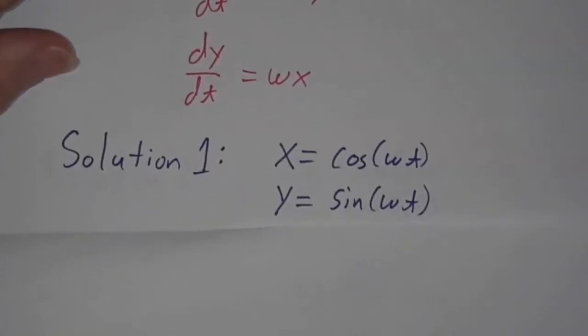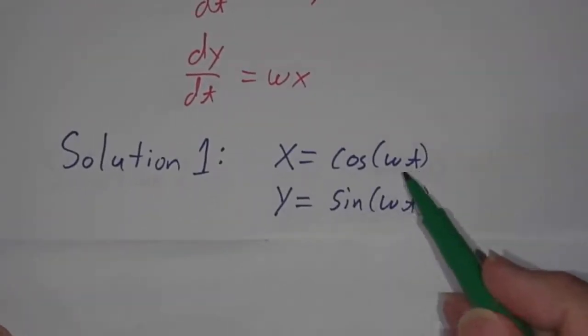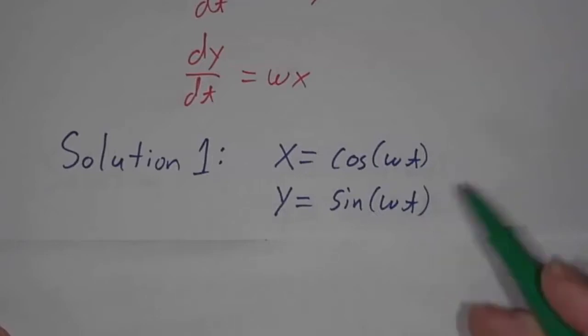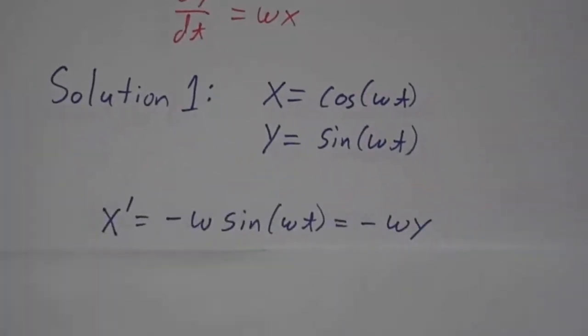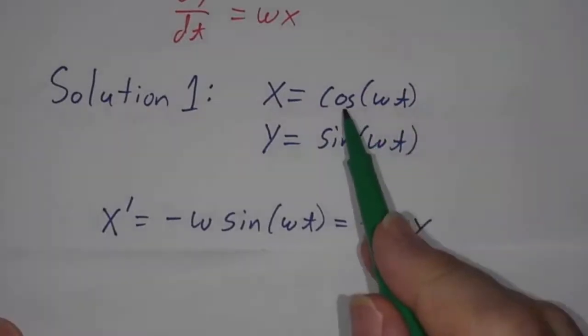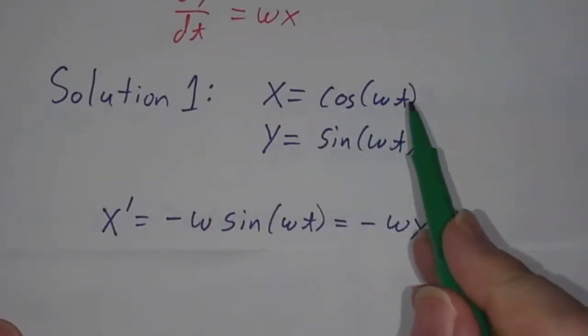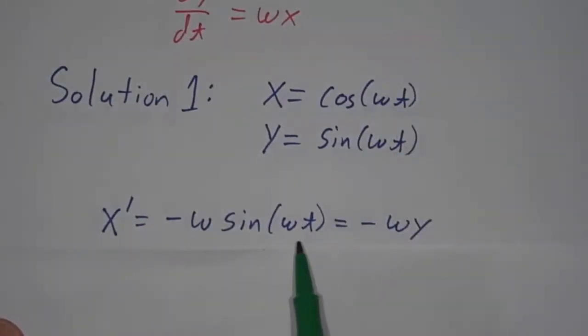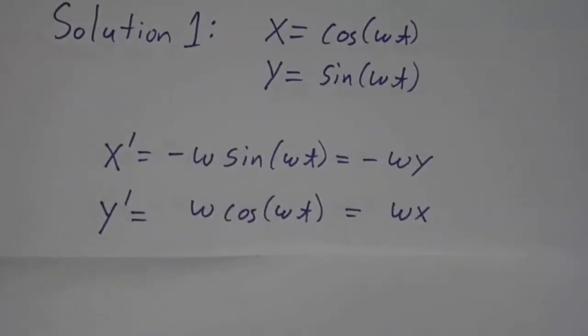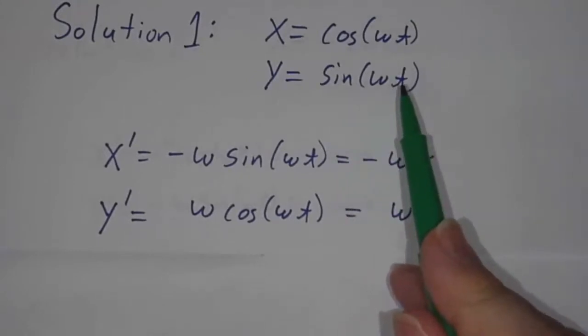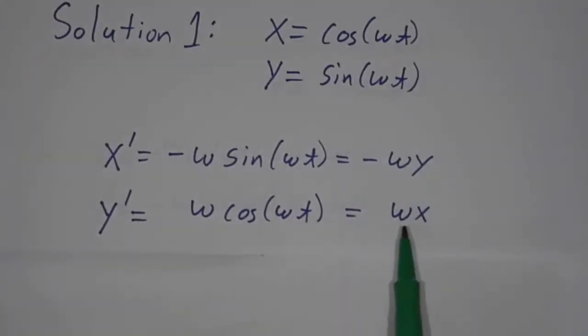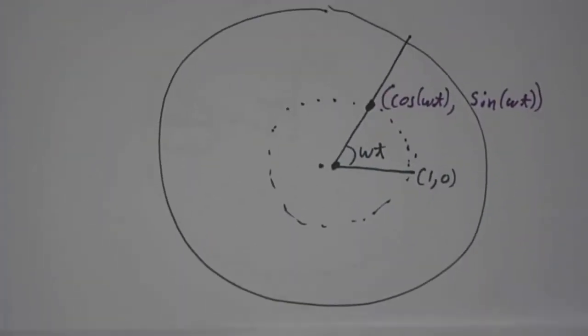Now here's one solution to that. One solution is if x is cosine of omega t and y is sine of omega t. Let's check that. The derivative of x, the derivative of cosine is negative sine. So we get minus sine of omega t. And then we get a factor of omega from the chain rule. So minus omega sine of omega t. Oh, that's minus omega y. And y prime? Oh, the derivative of sine of omega t is omega cosine of omega t, which is omega x. So it works. x prime is minus omega y. Y prime is omega x.